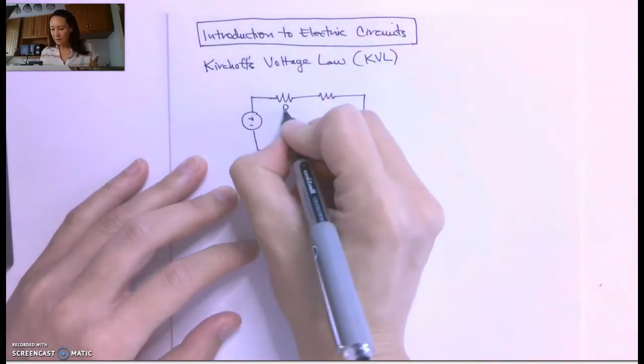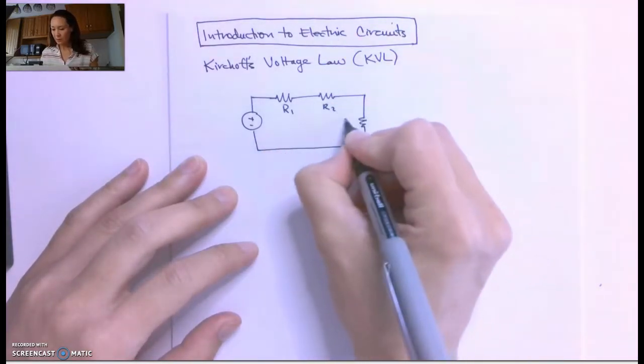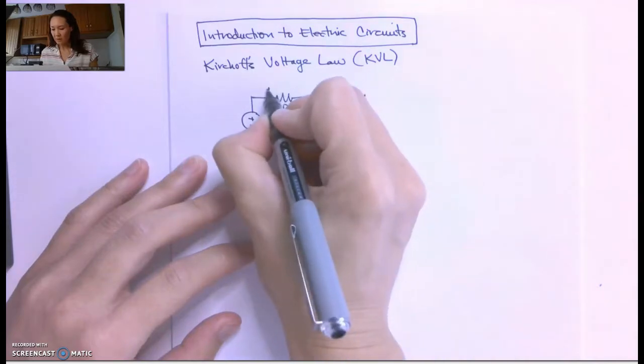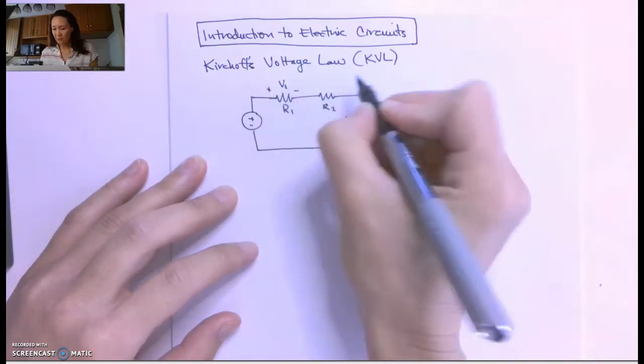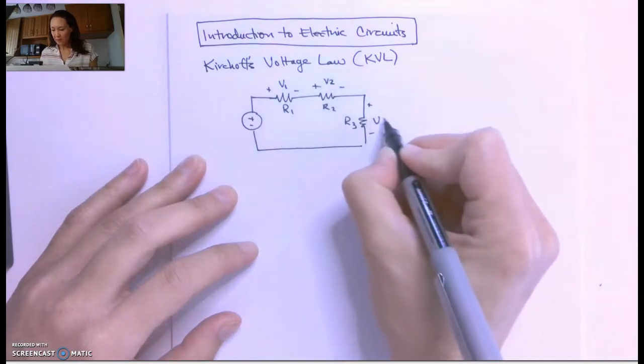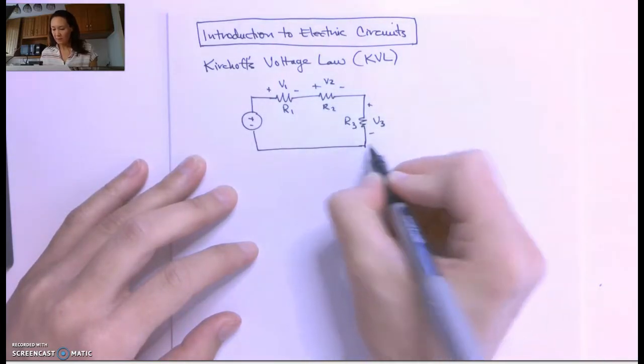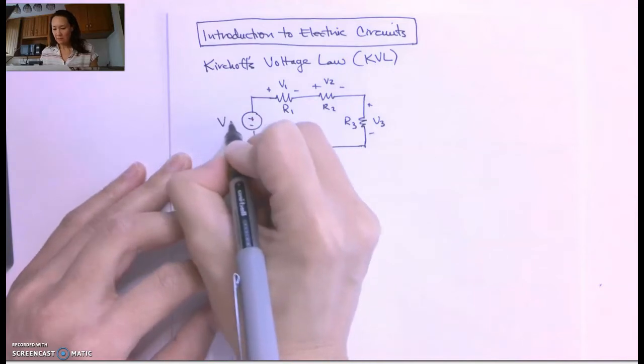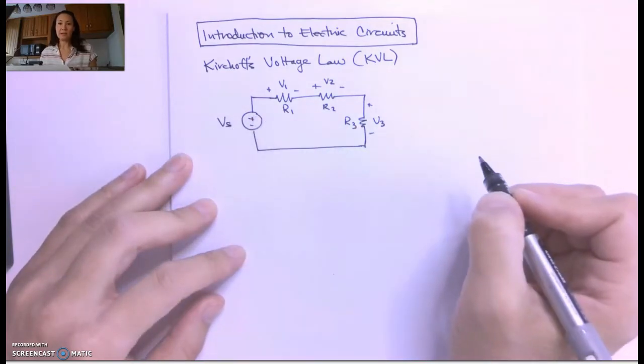And if this is R1, R2, R3, let's say there's a voltage drop V1, V2, and V3 for all these resistors. And I'm just going to name our source voltage V sub S.